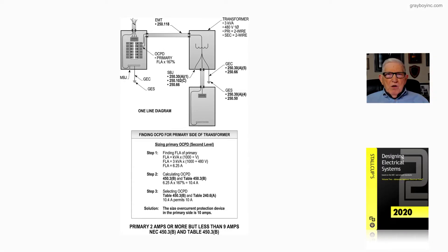Now we're going to size the primary overcurrent device with a full load current as less than 9 amps, but 2 amps or more, as outlined in our table 450.3B in the NEC.